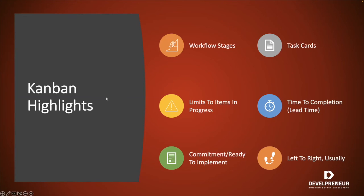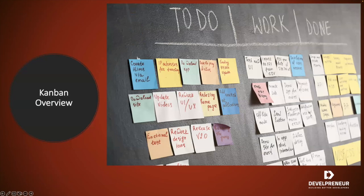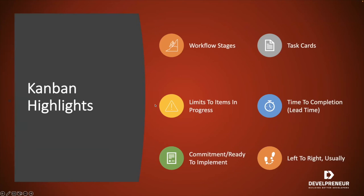Typically with Kanban it's very straightforward — you go left to right: backlog or to-do, in progress, and then done or complete. However, you can move items back to the left. Something might move into progress and get kicked back to the backlog. A common setup I've seen is backlog, in progress, test, and then done. It's not uncommon for something to move to test, get some feedback, and then get pushed back to the backlog or in progress, where that person may quickly pick it back up and work on it.